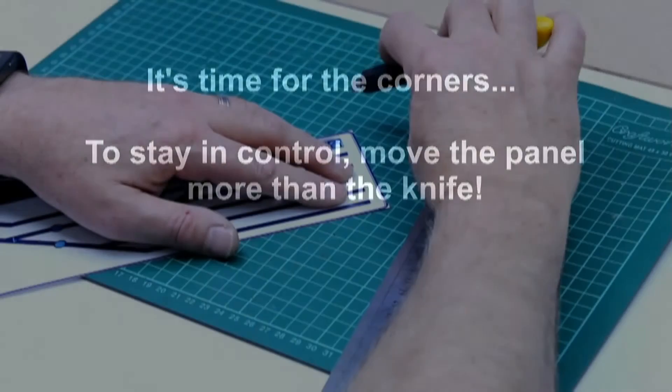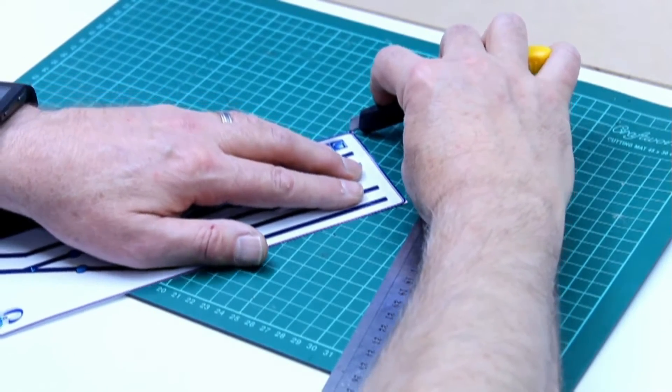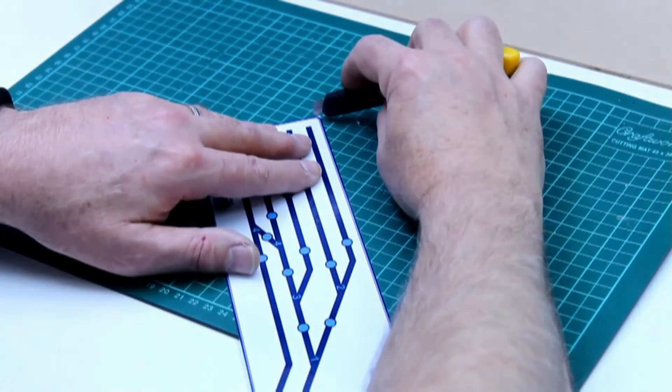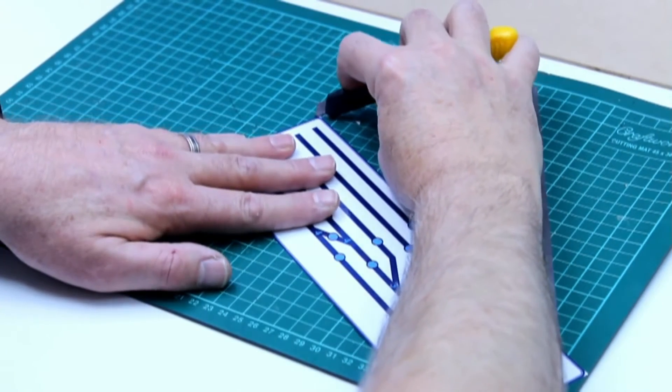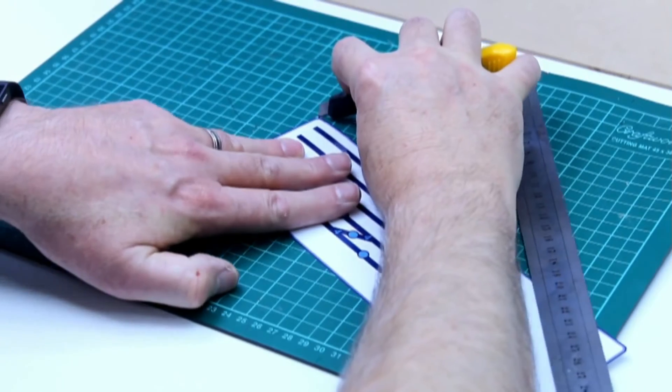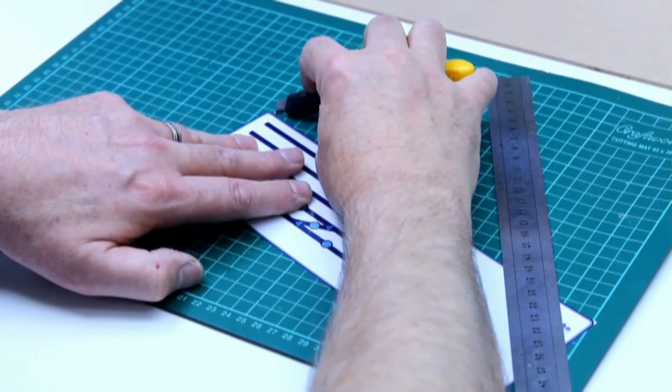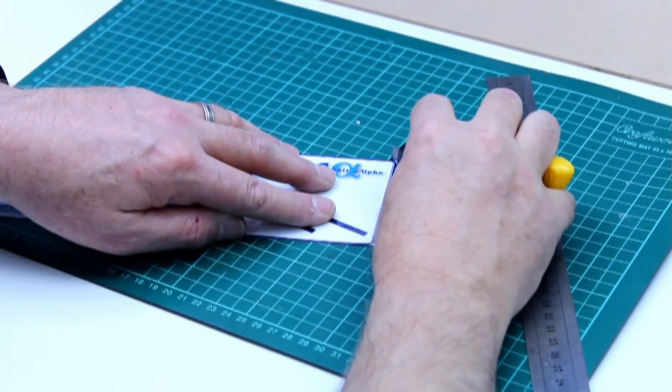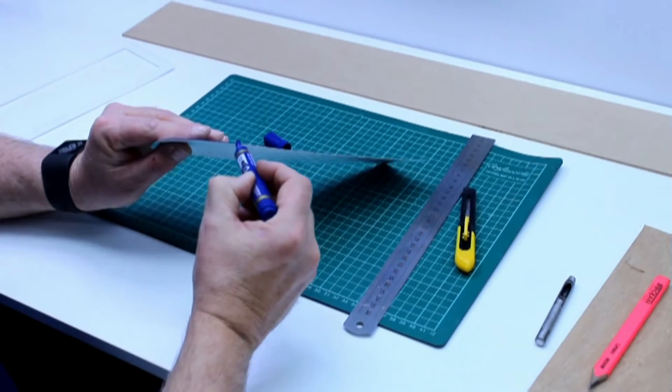When rounding the corners, move the panel more than the knife. A nice touch is to mark the edge.